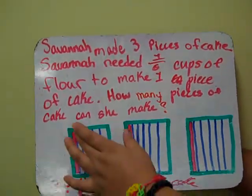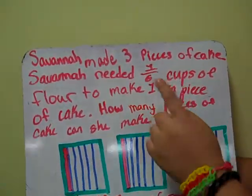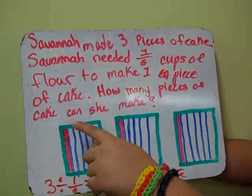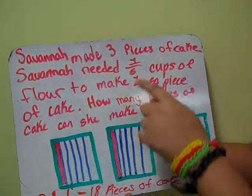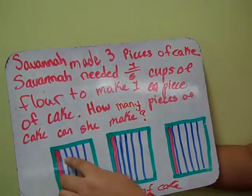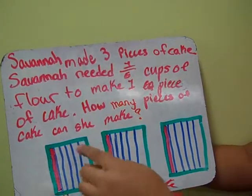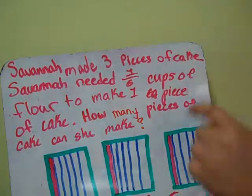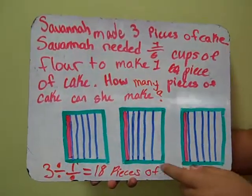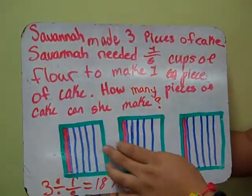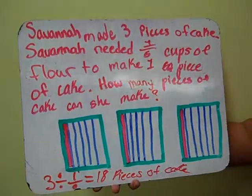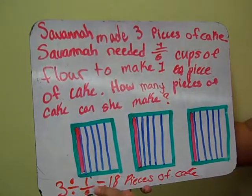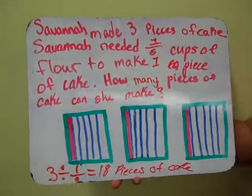So I drew three boxes right here to make the three, and then I drew five lines to make the six — because there's one, two, three, four, five, six. And then I colored in one because it says one sixth. And then you count all the boxes that are in here, and that made eighteen, which is three divided by one sixth equals eighteen pieces of cake.